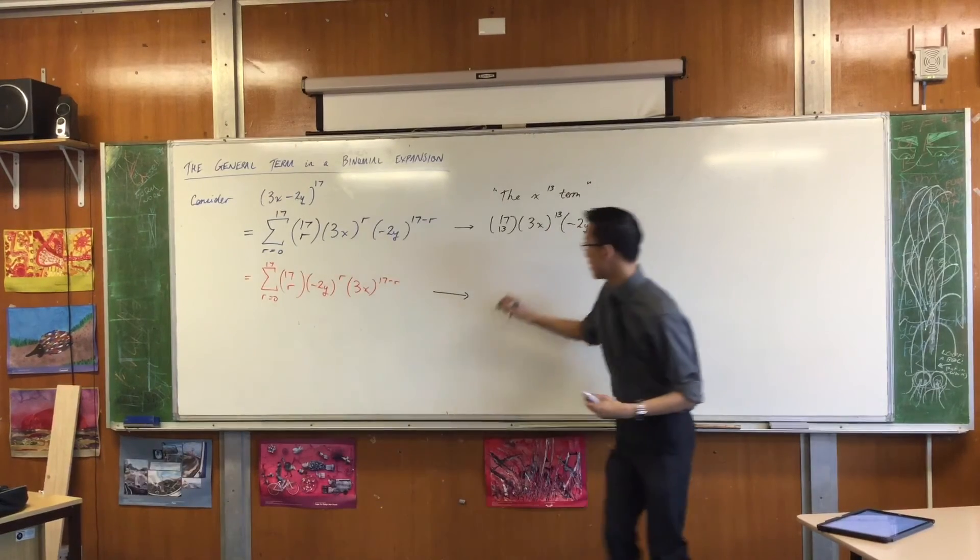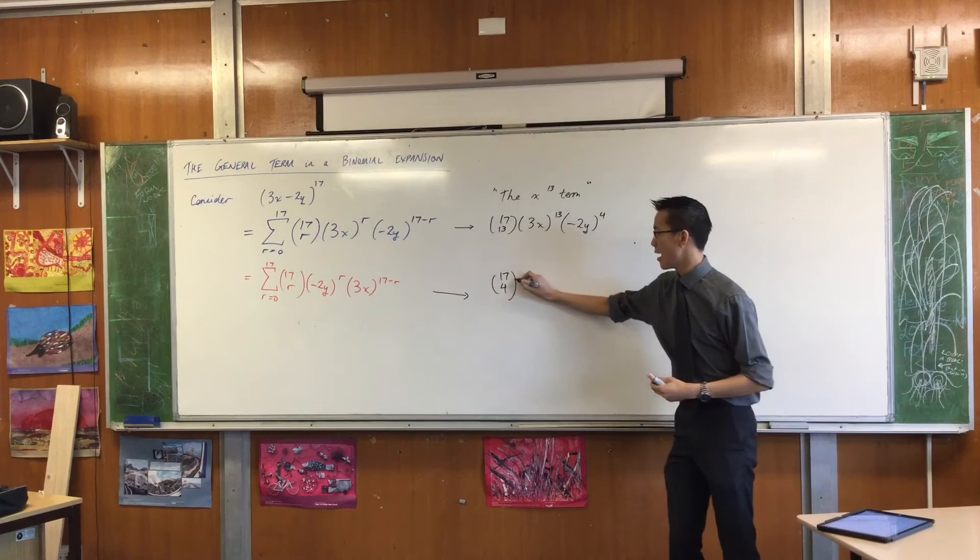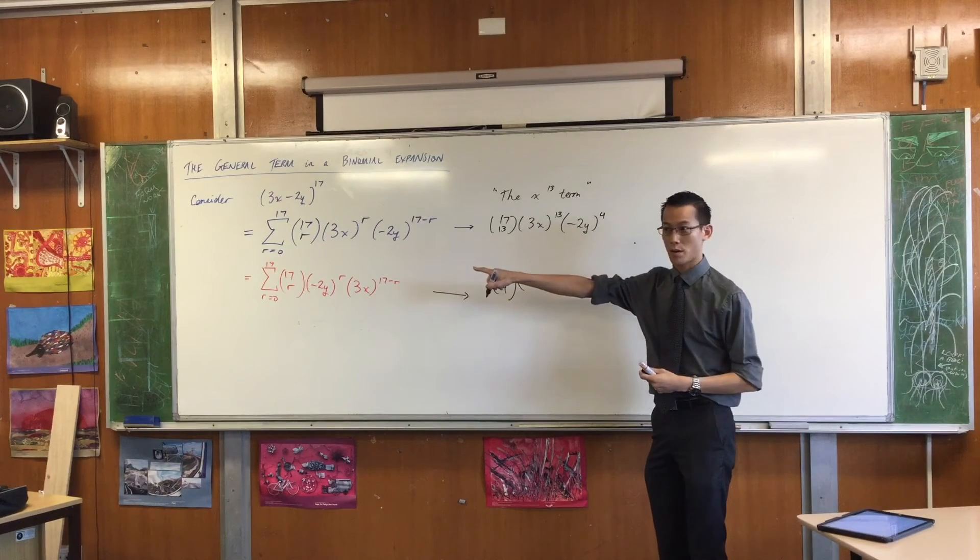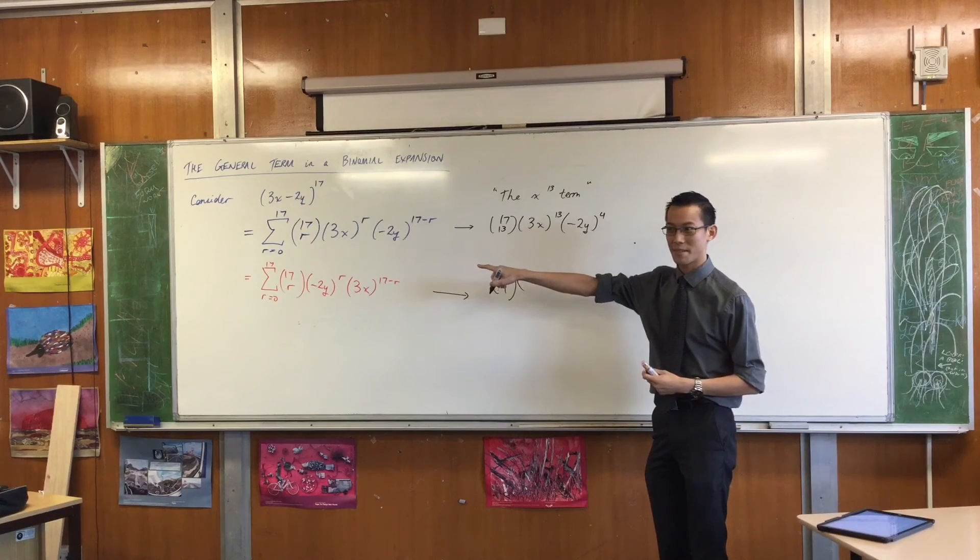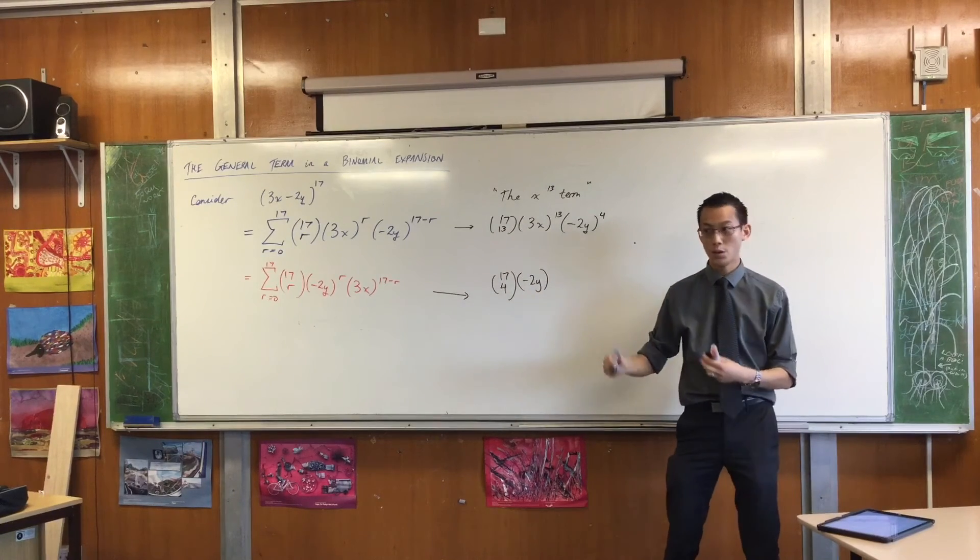So I would go, okay, that's fine. 17 choose 4, yes? How many of these guys am I going to have? Negative 2y's.